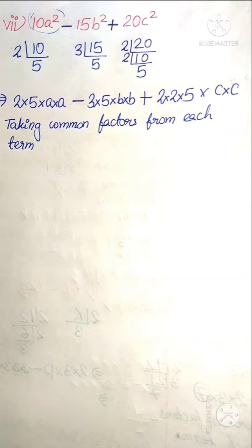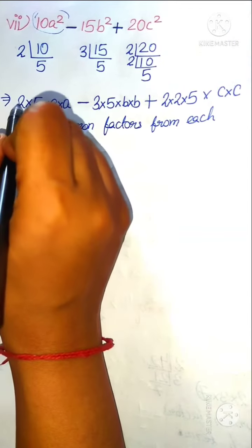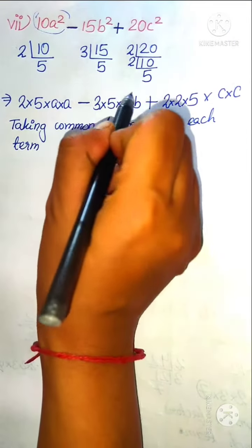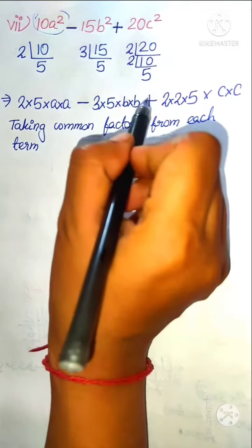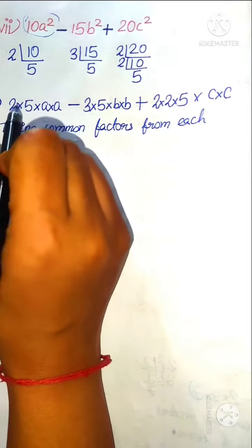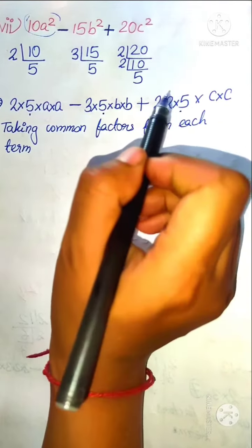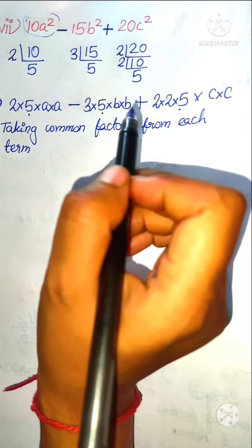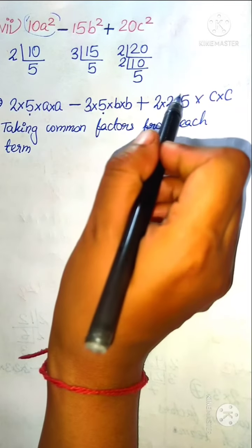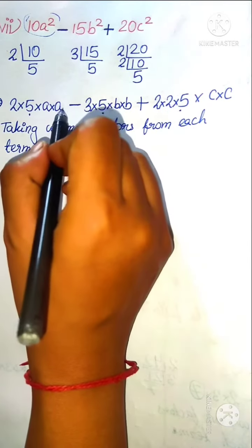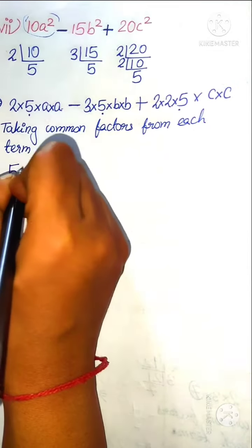Now by taking common factors from each term — we have 2 in the first term, no 2 in the second term, and 2 in the third. Since 2 is not in all three terms, it cannot be taken as a common factor. Next, we have 5 in all three terms, so we can take 5 as the common factor. The variable a is not present in all terms, so we can only take 5 as the common factor.